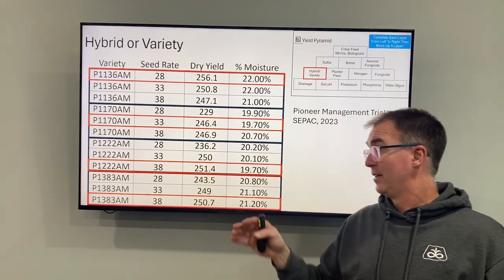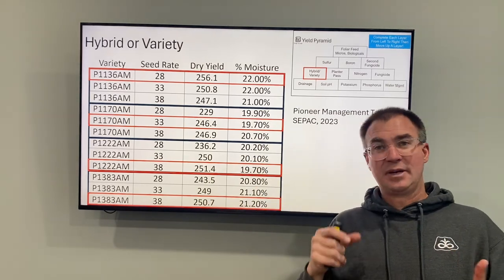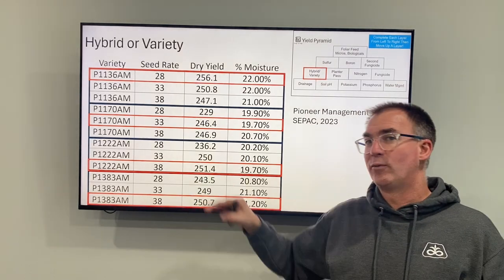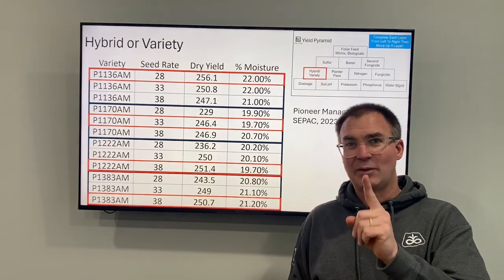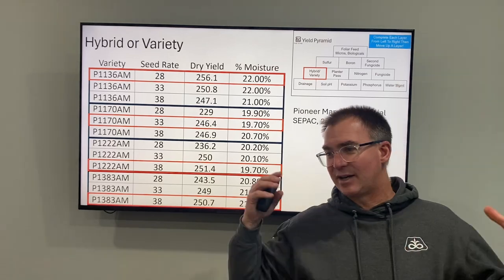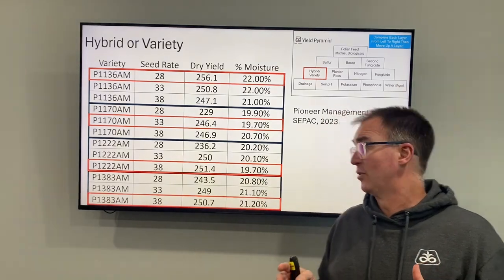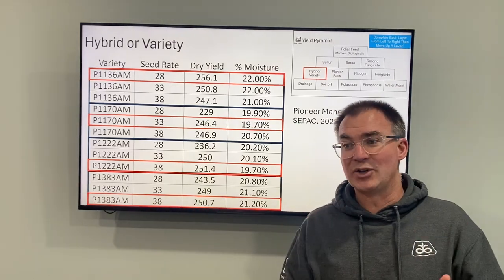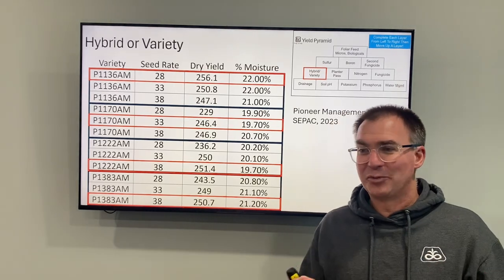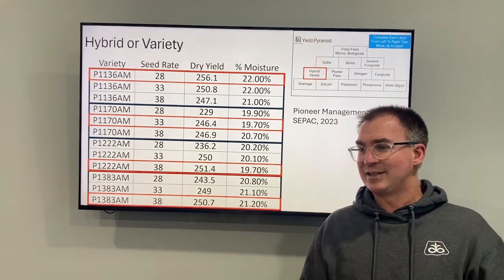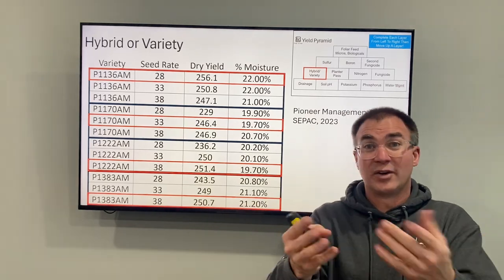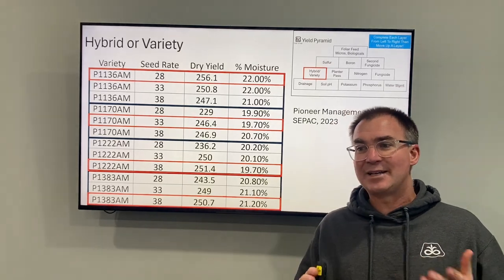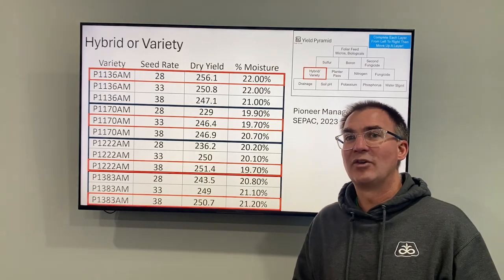That being said, even if the data shows the highest yield at 38,000, there may be other factors — root integrity, plant integrity — where you'd rather be in that 34,000 to 35,000 range. This is one data set, one point. We try to look at lots of locations and replications to get the best information we can. Just because 38,000 shows up here doesn't mean that's the right population for your farm and situation. We pride ourselves within the Top Crop group on knowing our products and where to place them for success. The last thing we want is to sell you a product that goes in the wrong soil, wrong situation, wrong population, wrong management, and you're not happy. We spend a lot of time finding the right products for your farms and the right recommendations to make them work.